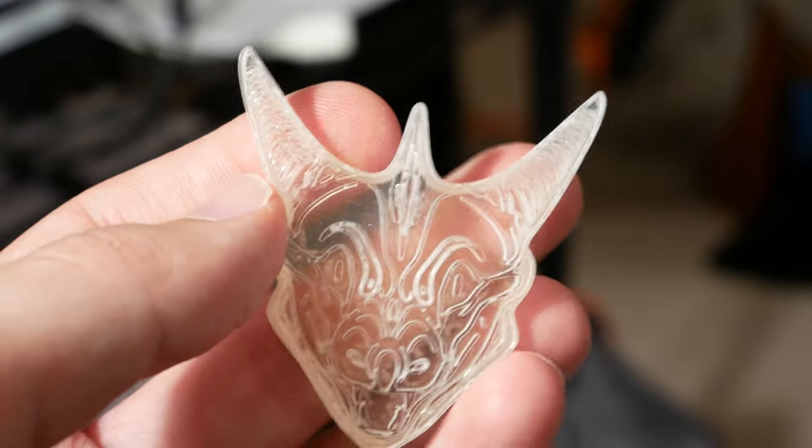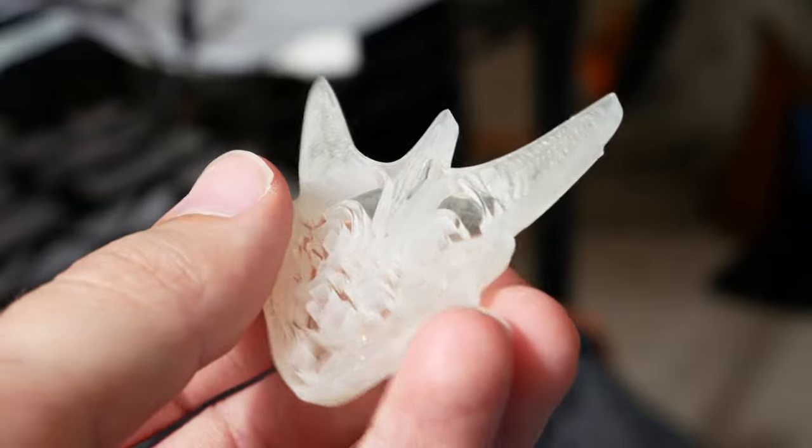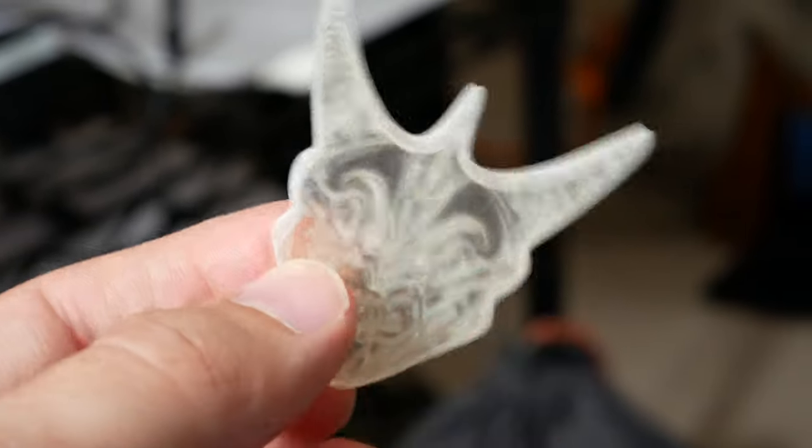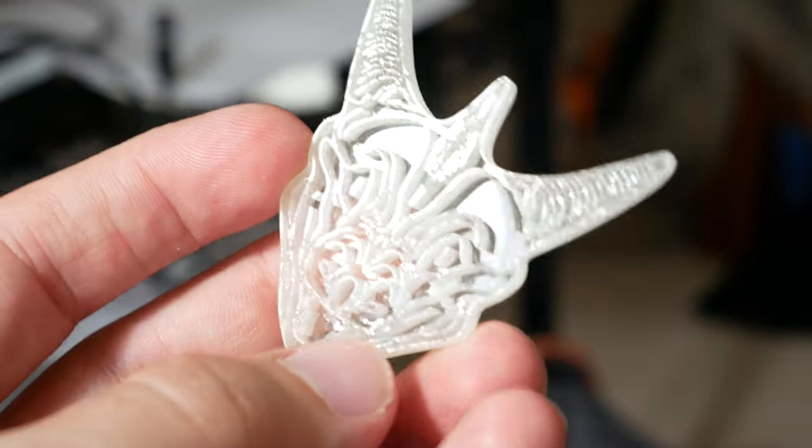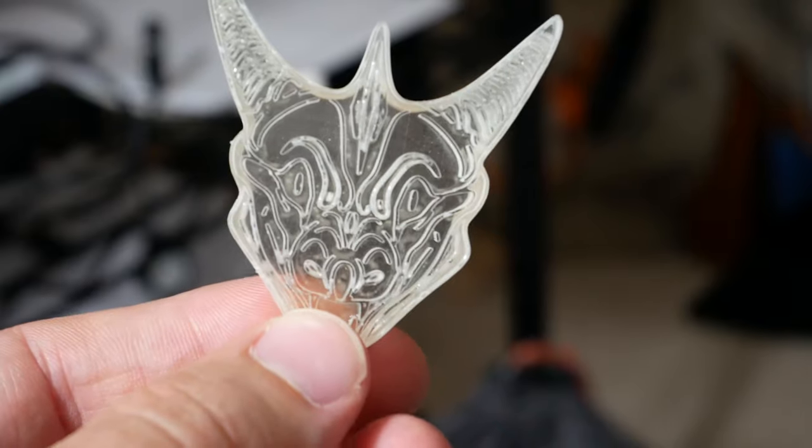I don't end up with any of those weird sticky spots that sometimes happens whenever either it doesn't wash quite right or there's some isopropyl left and it messes with the cure. I'm not quite sure why that happens but I've never had it happen whenever I cure it underwater, even just tap water. And of course after they were cured I rinsed them off again just in case and then made sure that they were nice and dry for the painting step.